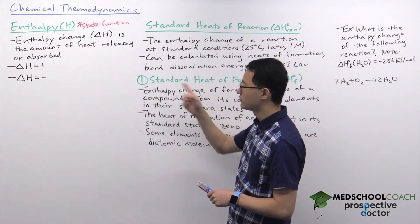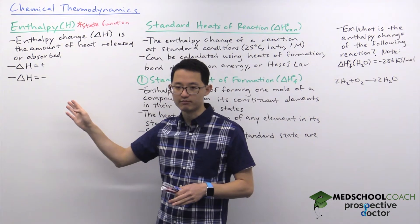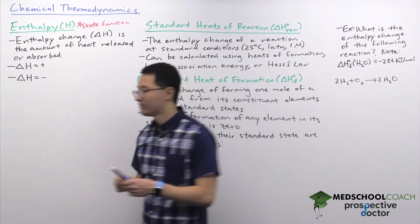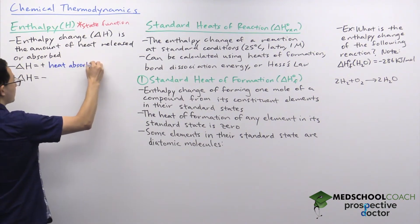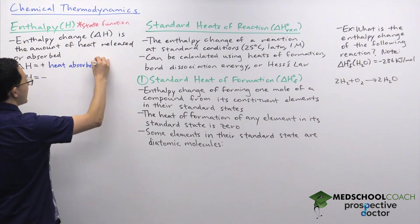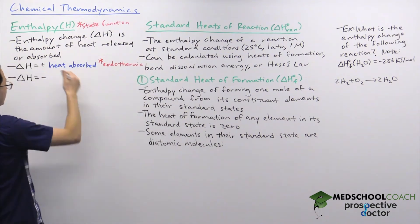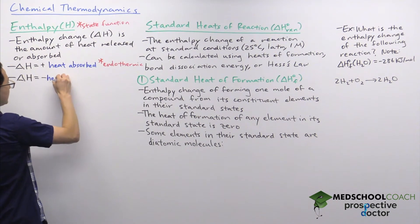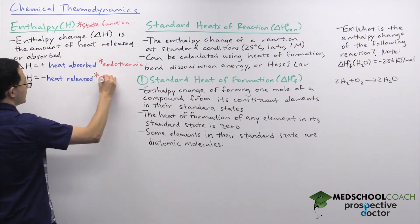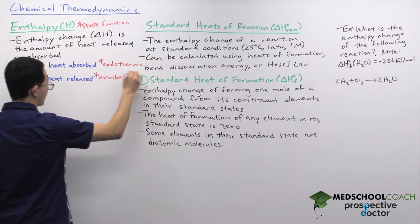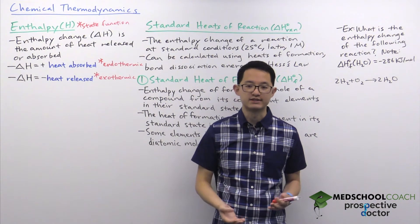Since enthalpy change looks at the amount of heat released or absorbed in a reaction, it can take on both positive and negative values. Positive values of enthalpy change mean that heat is absorbed, and we call this an endothermic process. If the enthalpy change is negative, heat is released, and we are working with an exothermic process. So it's important to keep in mind what delta H being negative and positive means.